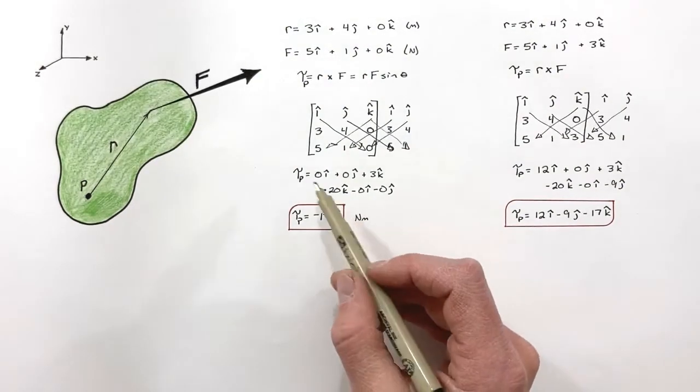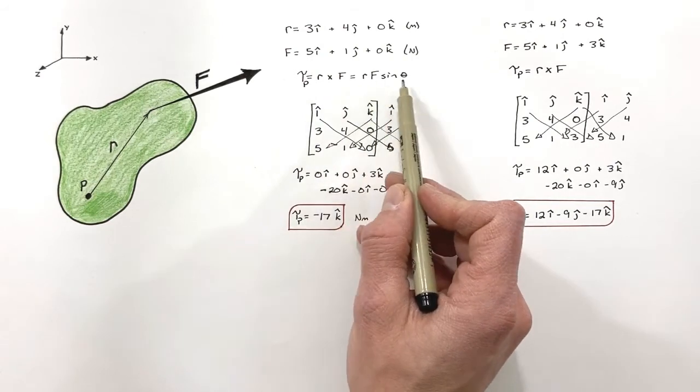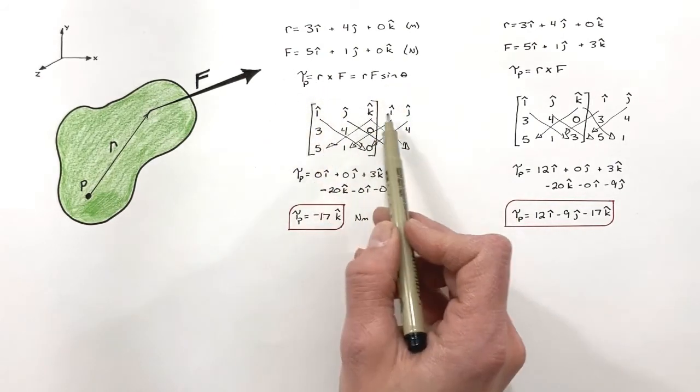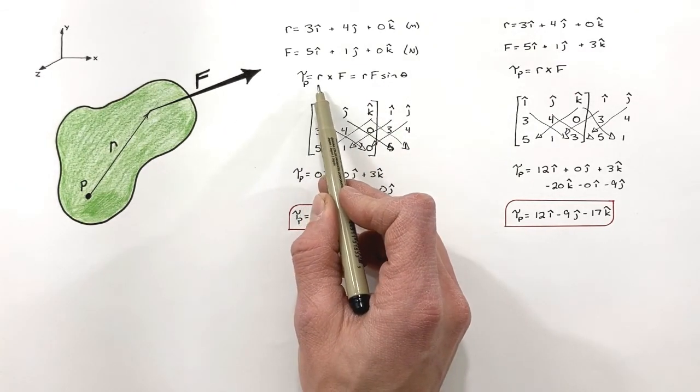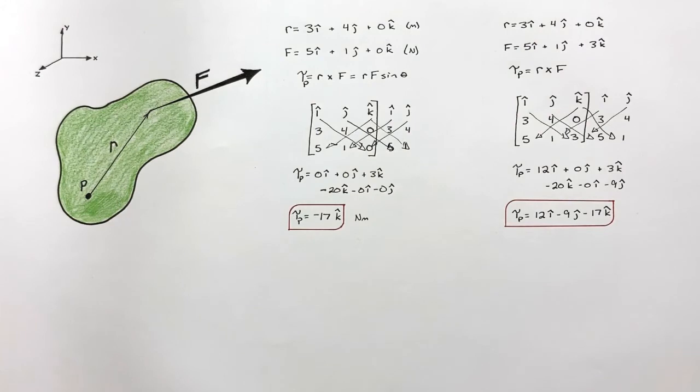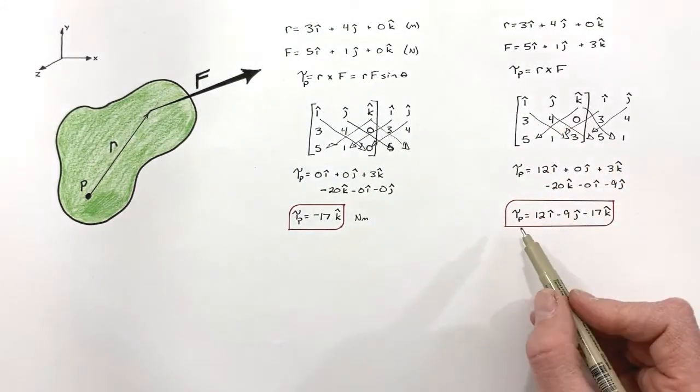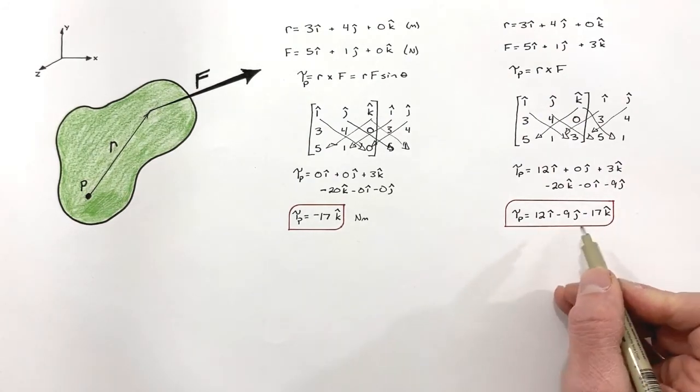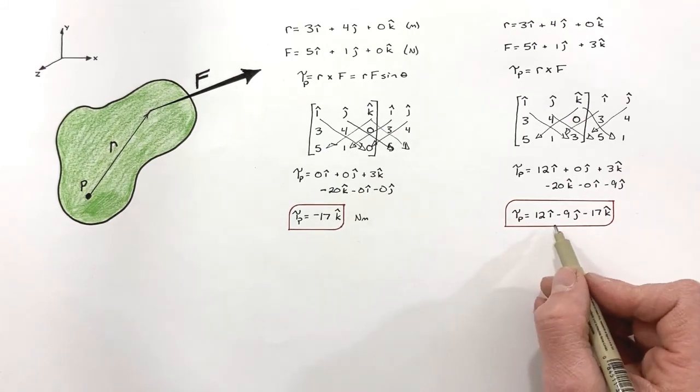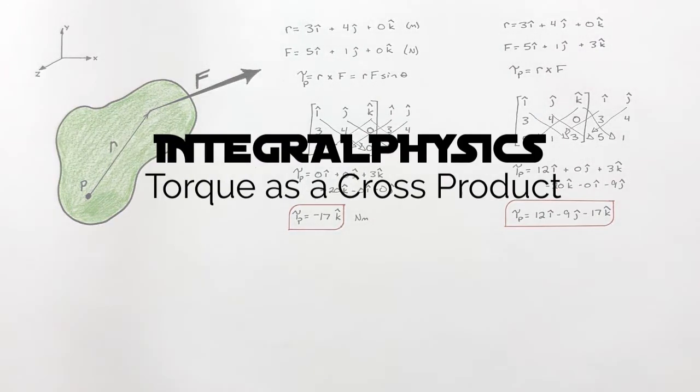So in summation, I want you to realize we can look at torque not only as RF sine theta using magnitudes and directions, but we can also use a matrix to solve for torque using a cross product. Now, when we use a matrix to solve a cross product like this, in this case torque, what we get is a result in component forms. And what you do with that, whether you turn it into a magnitude and direction or keep it as it is, that's situational. And on that note, that's all for now.